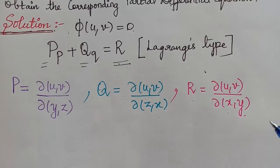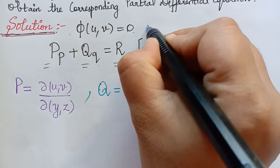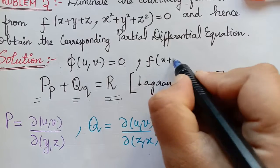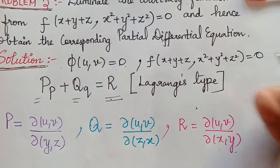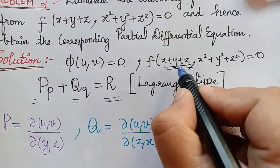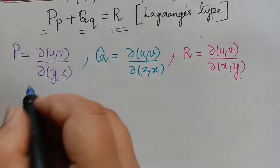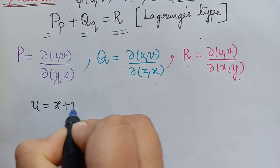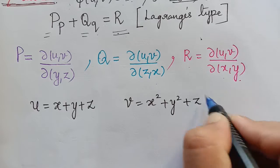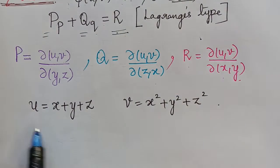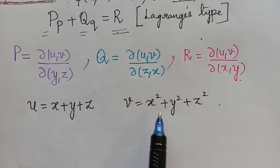We shall proceed with the problem now. The function φ(u, v) = 0 is given as f(x+y+z, x²+y²+z²) = 0. So at the place of u we have x+y+z and at the place of v we have x²+y²+z². Therefore, u = x+y+z and v = x²+y²+z².